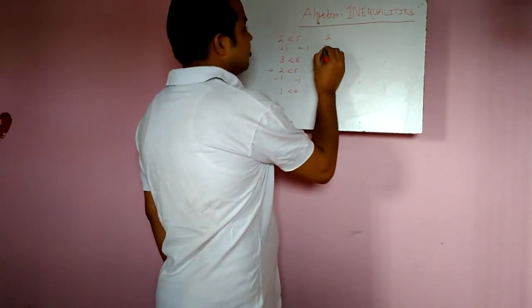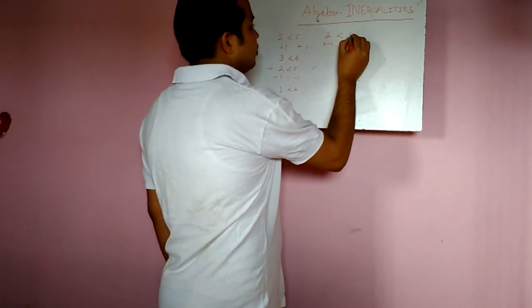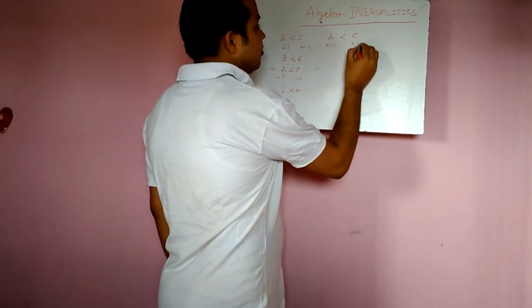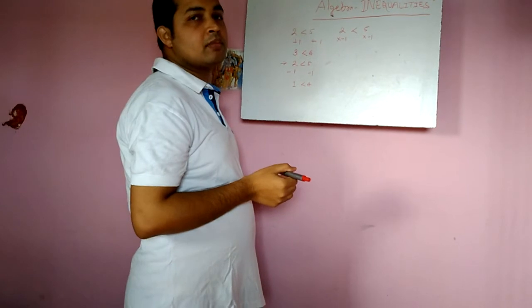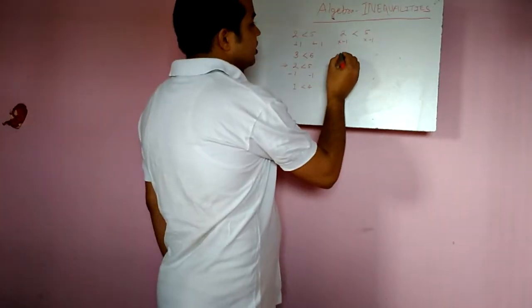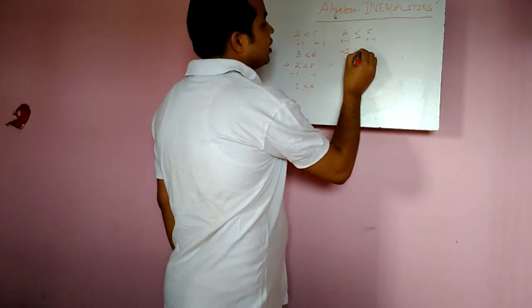2 multiplied by minus 1 and less than 5 multiplied by minus 1. In multiplication we will have to take a note that after multiplication this inequality sign will change.